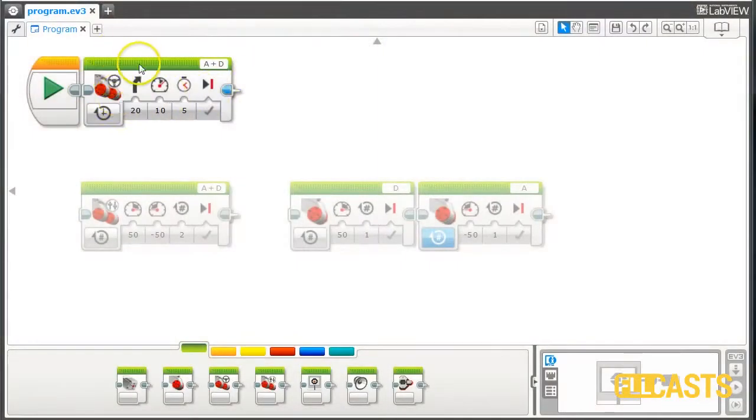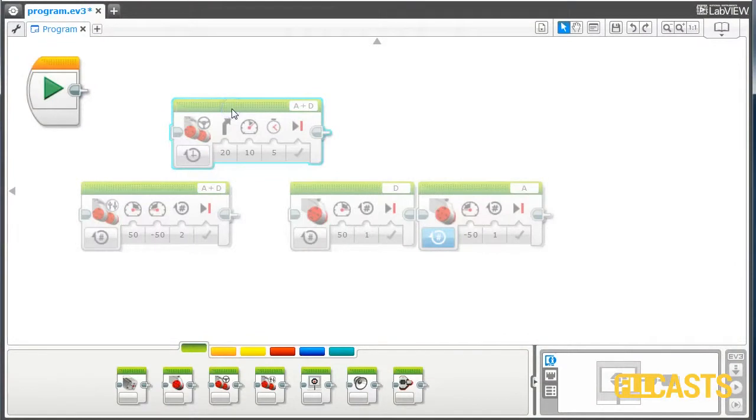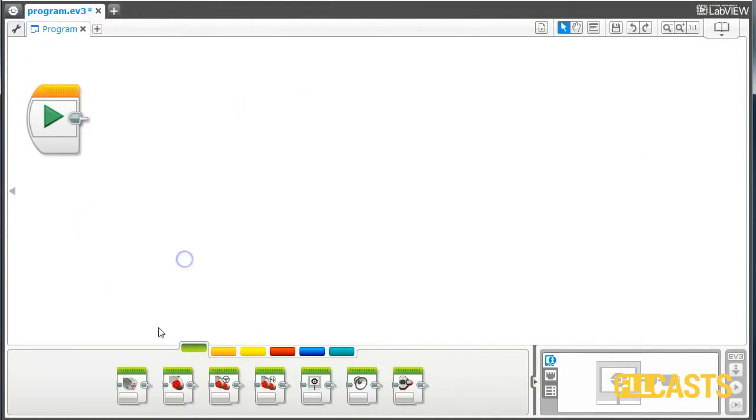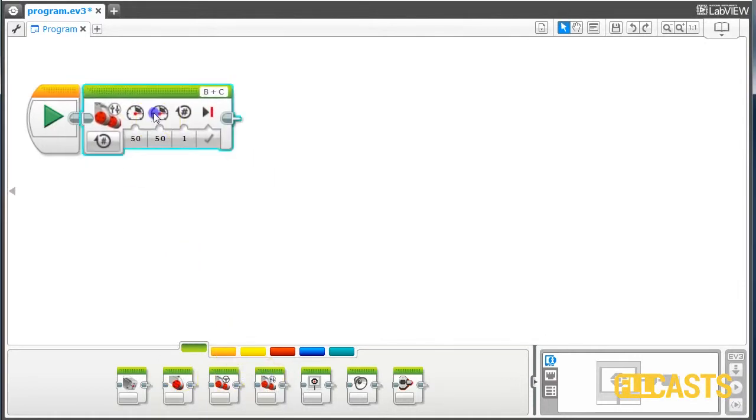I will now program the robot to move. Let's first delete these blocks here that are left from previous programs. So I would like to move with both motors forward and these are motor A and motor D for one rotation.